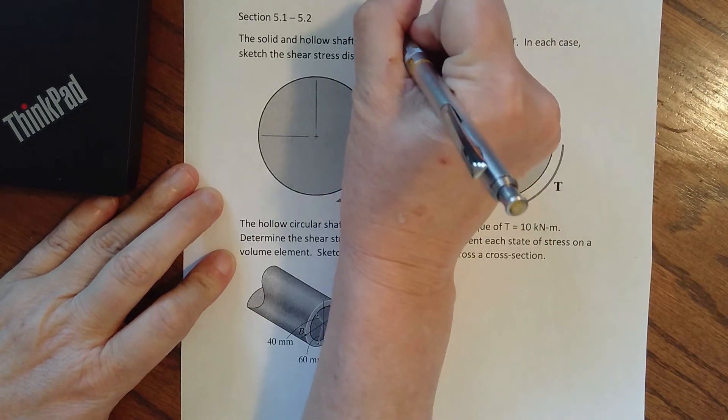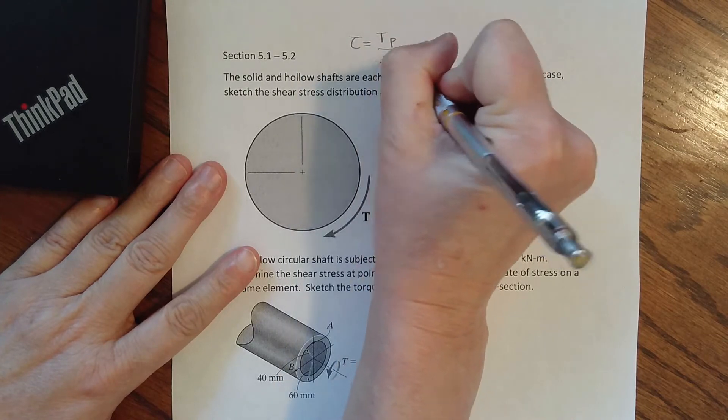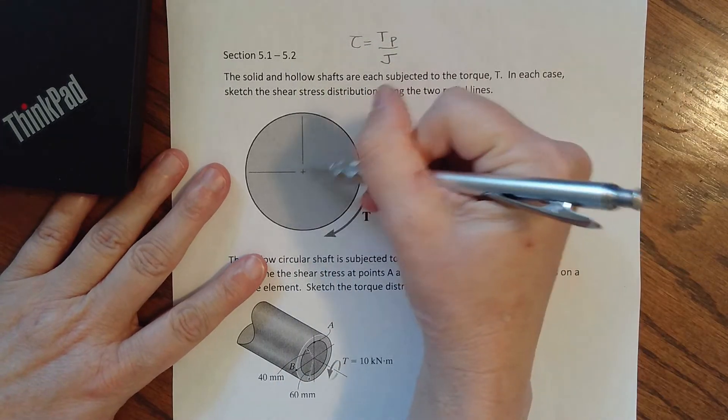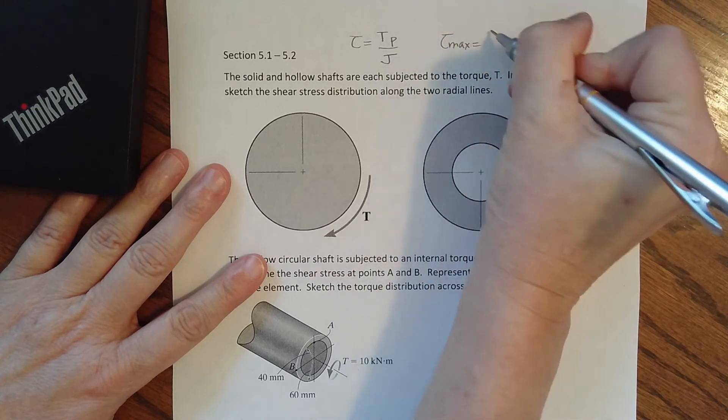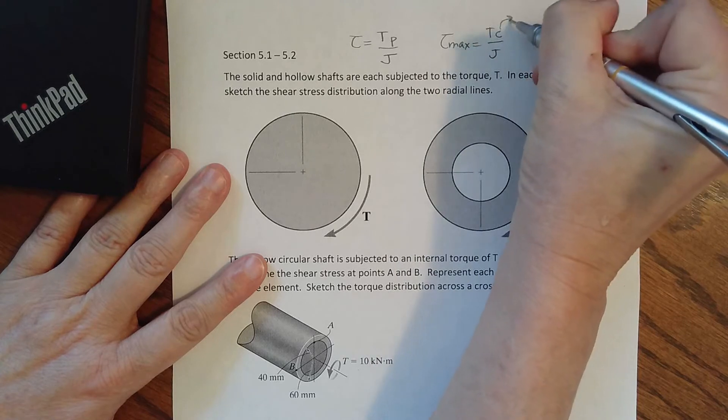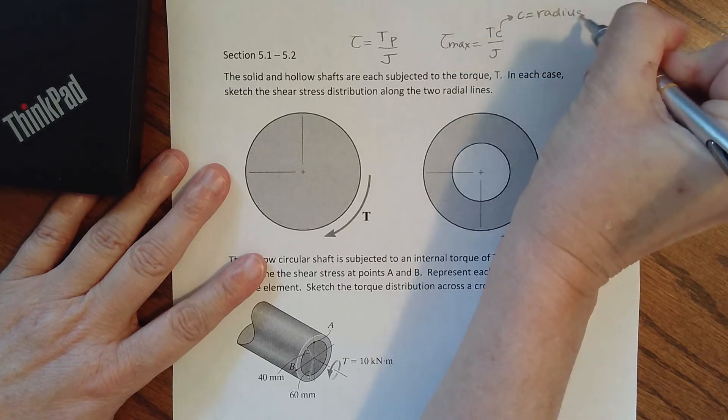With torsion we have developed that our shear stress is equal to T rho over J, and that is anywhere along the radial length. Our maximum shear stress is Tc over J, and we need to remember that C is the same thing as the radius.